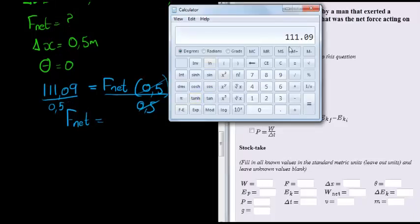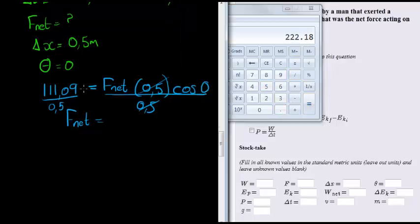So we get the net force is 111.09 divided by 0.5. That divided by 0.5 equals 222.18 Newtons. This is the net force acting on the ball.